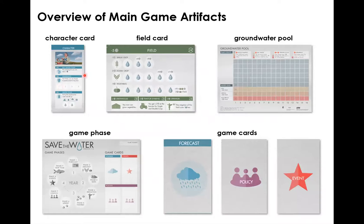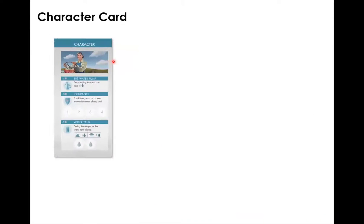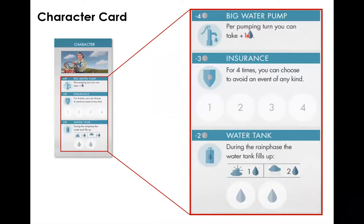The main artifacts are composed of different cards, each with their own specific use. For the character card, each player has one, and on this card there are some equipment items that you can acquire during the game and use throughout. These equipment items include the big water pump, agriculture insurance, and water tank. Each equipment comes with a cost indicated by the silver icon — so minus four means you have to pay four coins to get it. The effect of each equipment is written below the title. Apart from the character card, you have multiple field cards that you can buy as your farmlands. On the top of the field card is the price to buy new land — each land costs five coins — and there is also the cost to maintain this land, indicated by the circular icons, which is two coins.